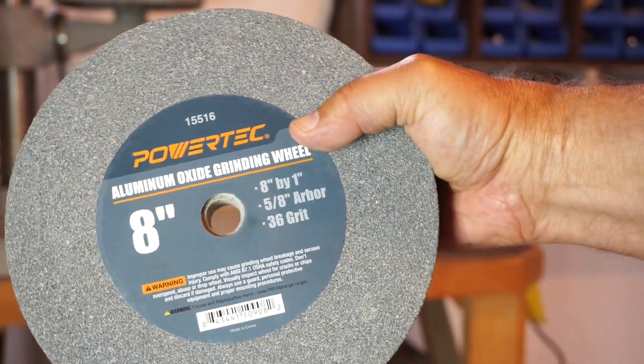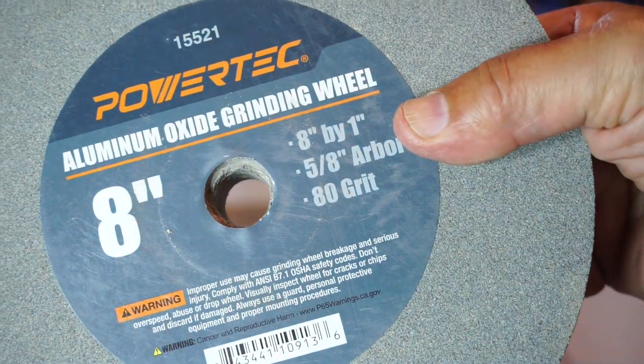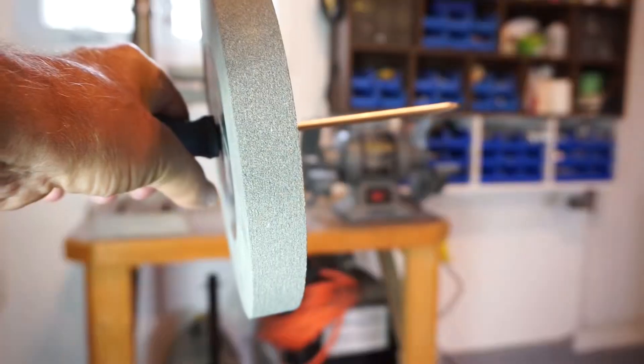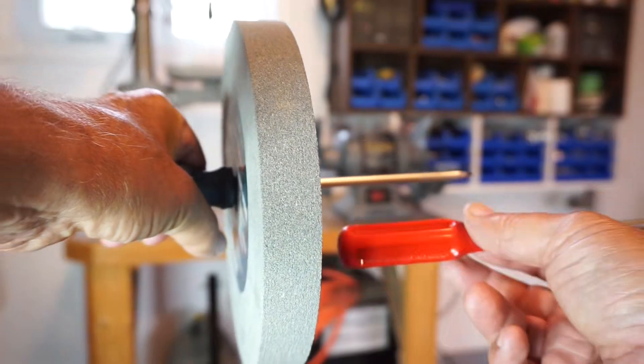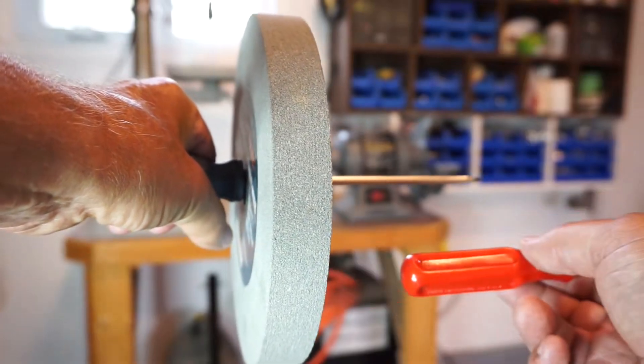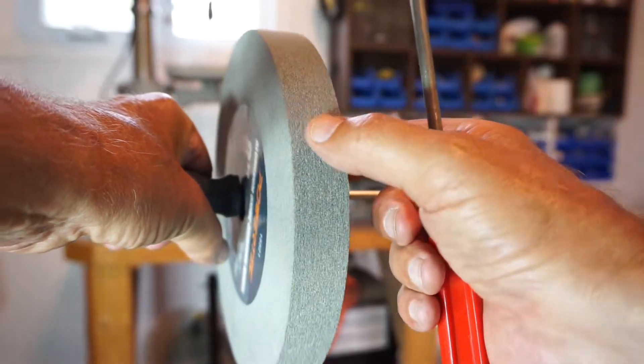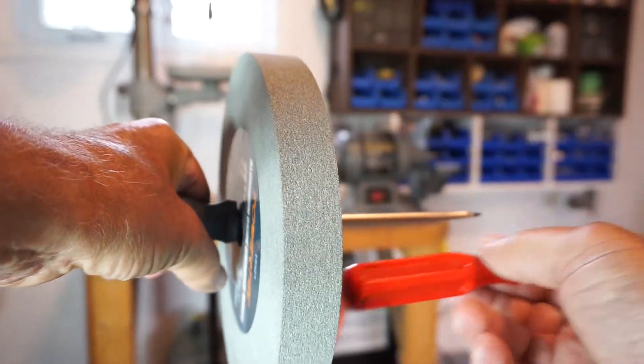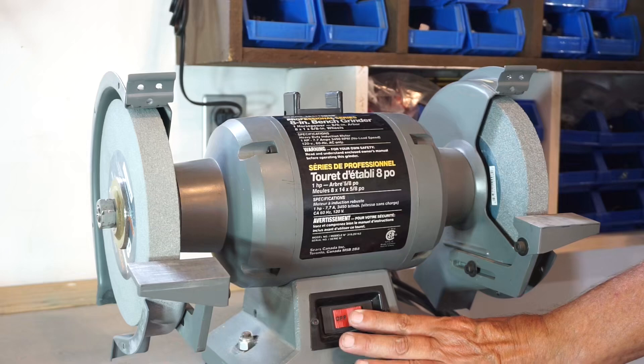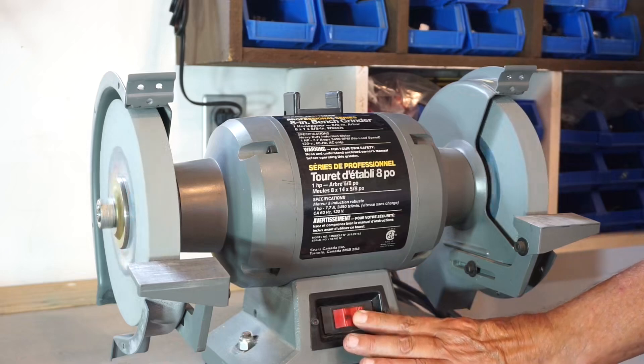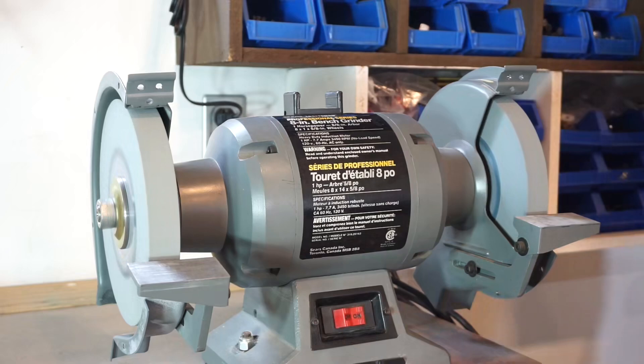This 36 grit one and for the other side, an 80 grit. Always a good idea to ring test a stone before installing it. If you hear a thud, it's no good.